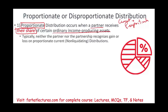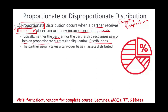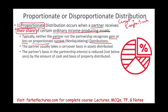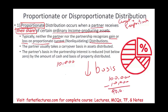Generally speaking, on a proportionate current distribution, neither the partner nor the partnership recognizes gain or loss — there is no gain and no loss, though there are always exceptions. Typically, the partner takes the carryover basis in the asset distributed, so the basis from the partnership is transferred to the partner. The partner's basis in the partnership interest is then reduced. Distribution reduces your basis — for example, if you receive property with a basis of $10,000 and your basis is $100,000, your basis is reduced to $90,000. However, distribution cannot reduce your basis below zero.